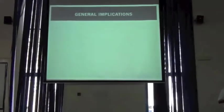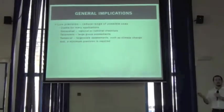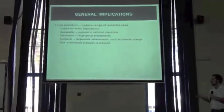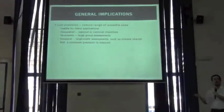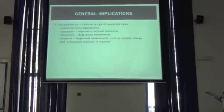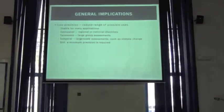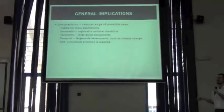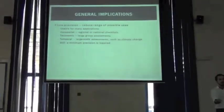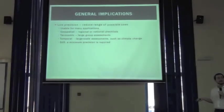The general indication of having low precision in biodiversity data is that it reduces the range of possible uses. Still, low precision data is usable to a certain extent. For example, low precision coordinates can be used for regional or national studies, or having only the country value can still be used for national studies. Low precision taxonomic data can be used in large group assessments, and low precision temporal information can be used in large-scale assessments such as climate change. We don't need to know the specific date for climate change analysis. But still, some minimal precision is required.